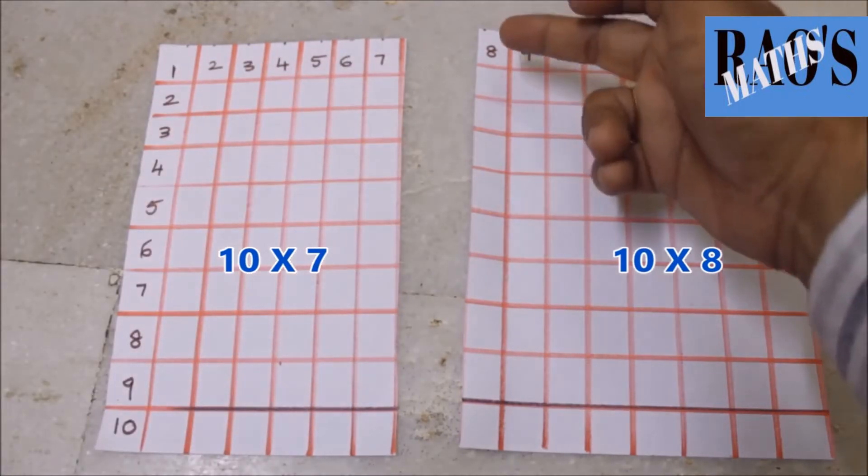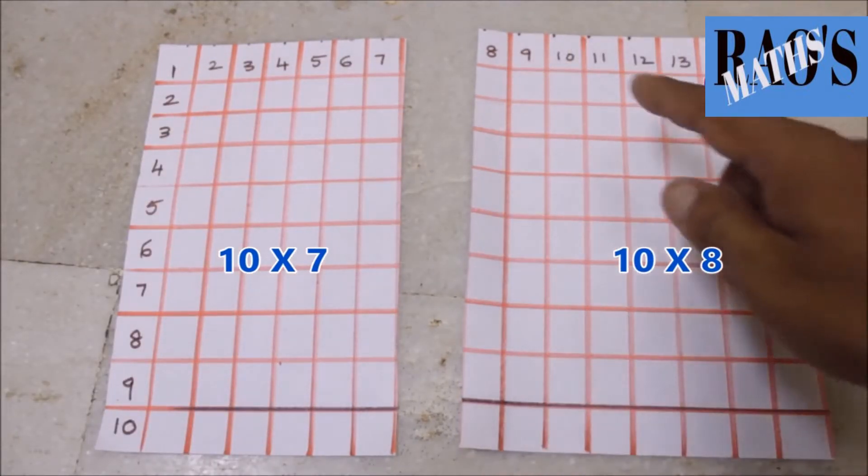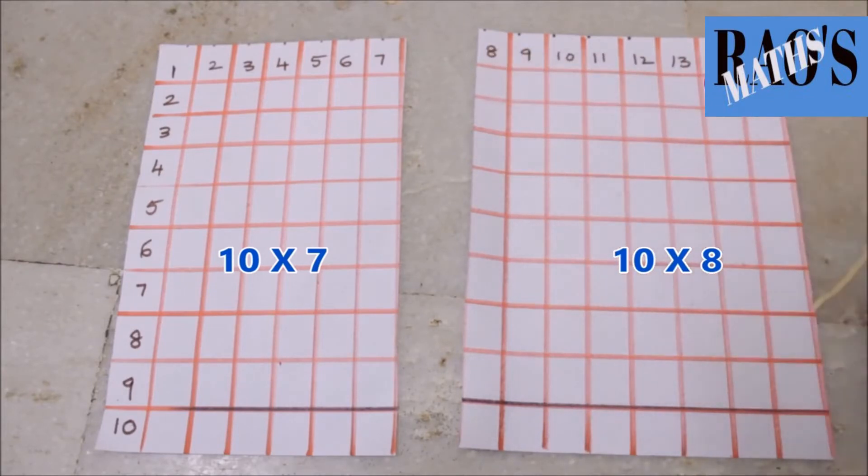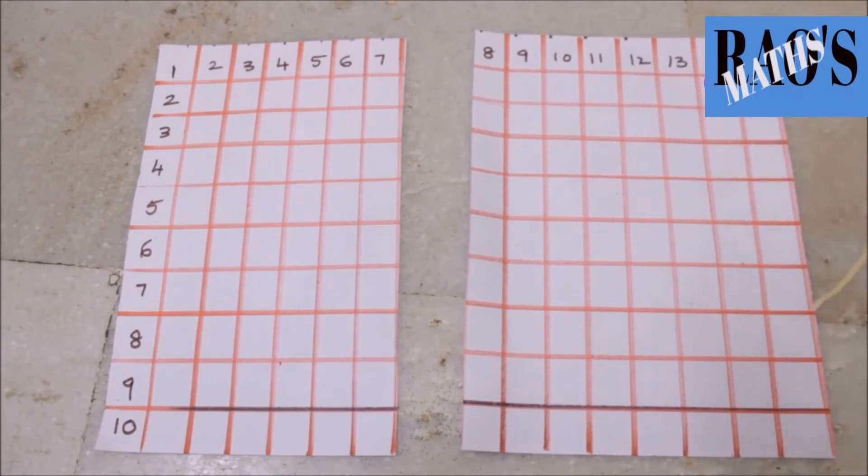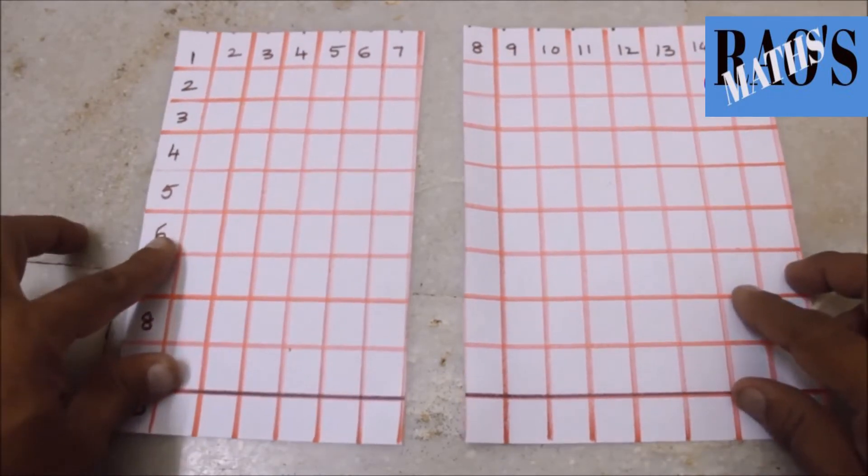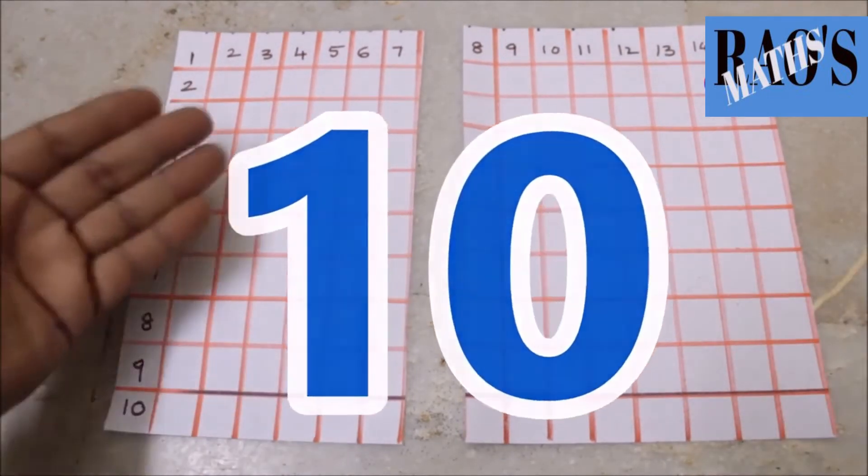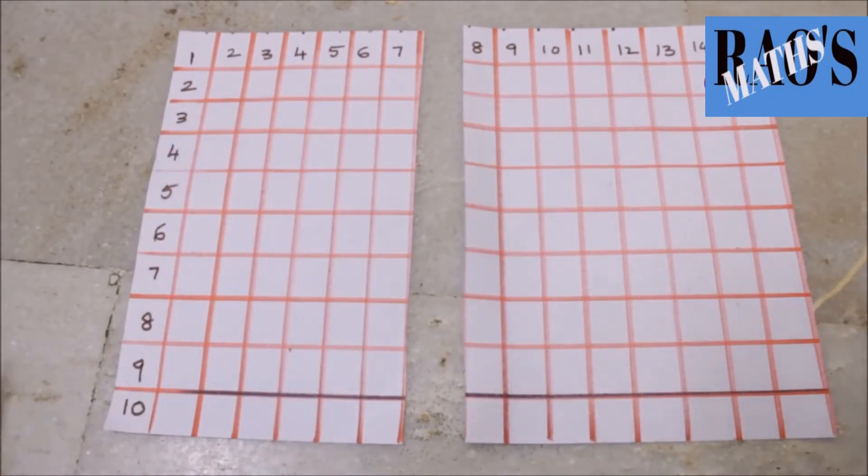And the second bit we have the same 10 rows and the remaining 8 columns. Totally 1, 2, 3, 4, 5, 6, 7, 8. In both the papers the rows are common, that is 10.